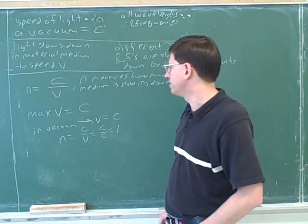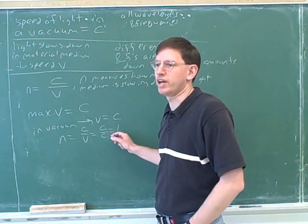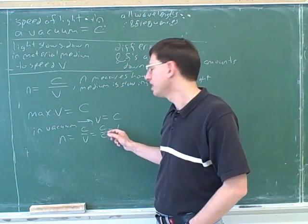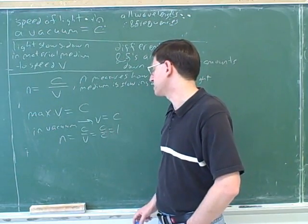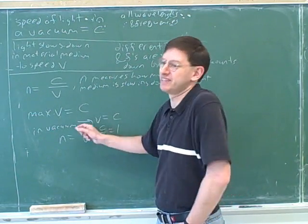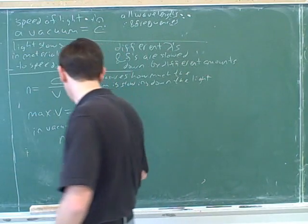Remember I said earlier that the index of refraction in the vacuum is 1 and we were just memorizing it, but now we've shown why the index of refraction is 1. Because the speed of light is the same in the vacuum as in the vacuum, obviously.